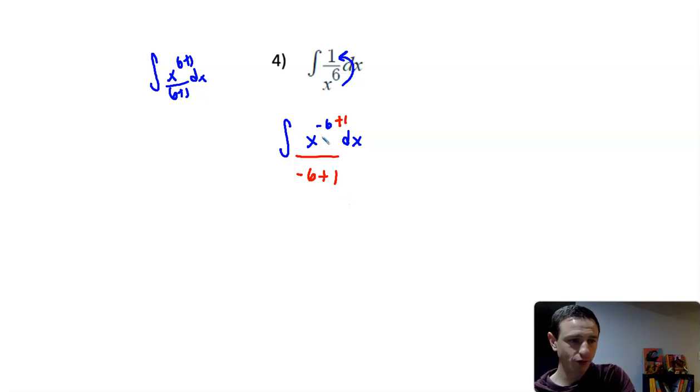So, don't let the negative throw you off. Don't let the negative make you think I've got to do this different process. It is still power rule. It's still the same as integrating x to the 6th with it just being a positive 6. It's the exact same process.